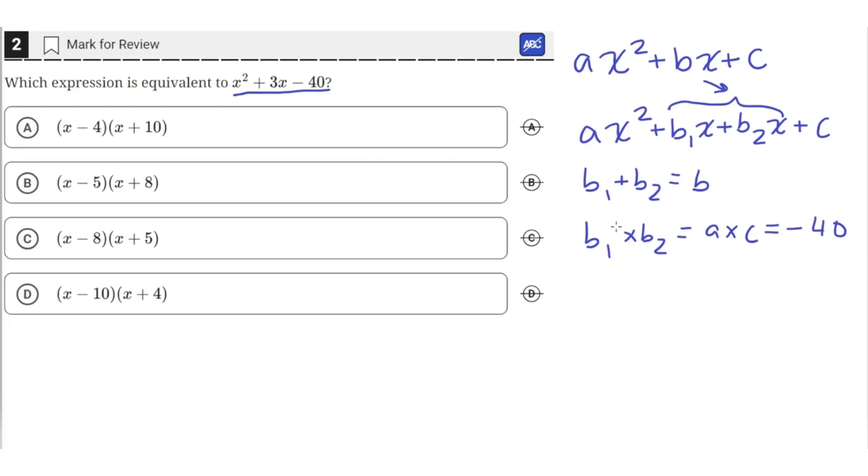The only two numbers that satisfy these two conditions are 8 and negative 5, because 8 minus 5 equals 3, and 8 times negative 5 equals negative 40.